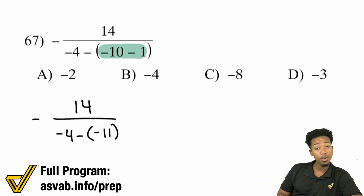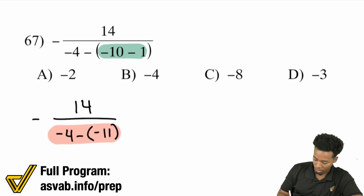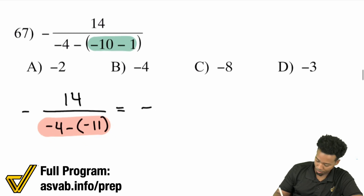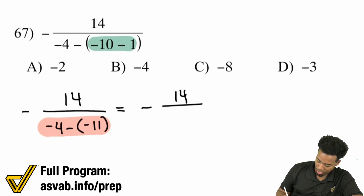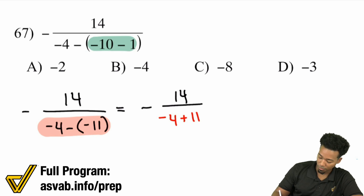From here: we have ourselves minus negative 11. What this is going to turn into is 14 up top, and then negative 4 minus negative 11. Minus a negative is the same thing as adding, so we have negative 4 plus 11 in the denominator.